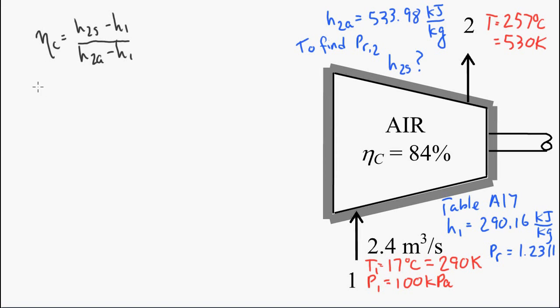We already know all the values except for H2S, so we can solve for that. And we get a value of 495.0 kJ per kg.